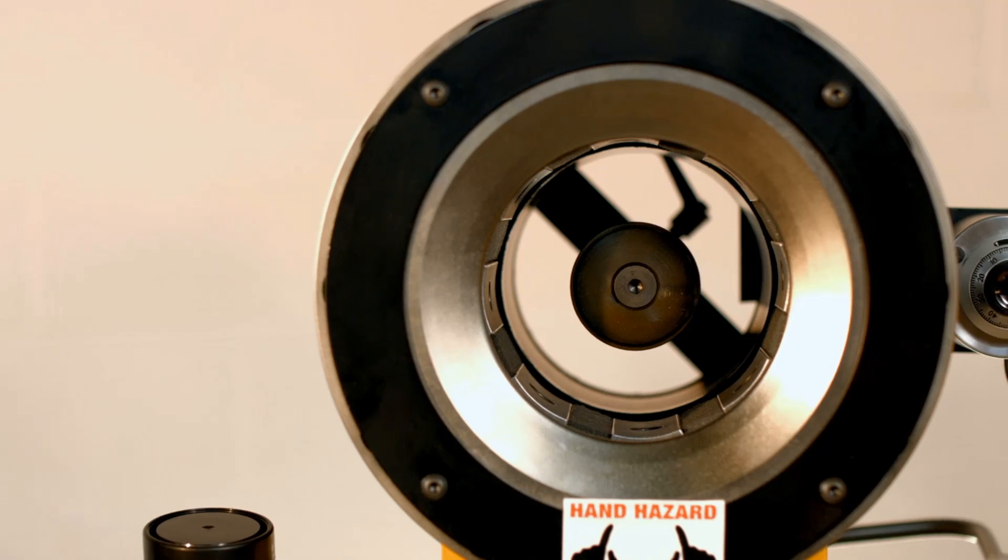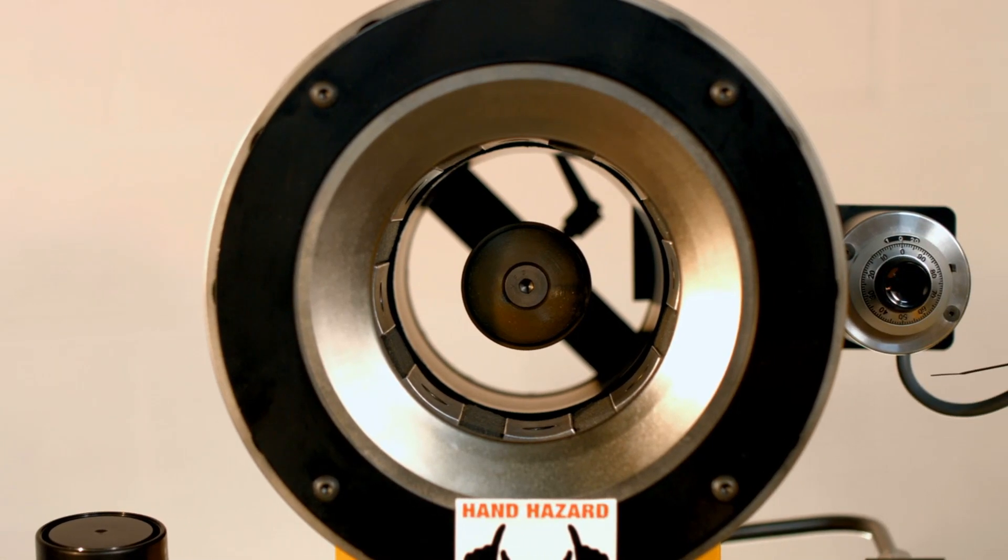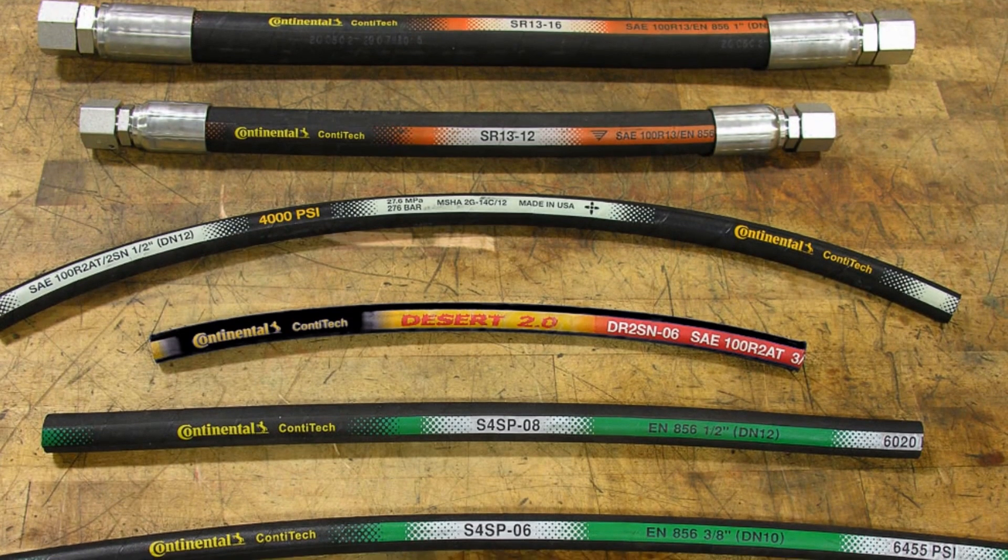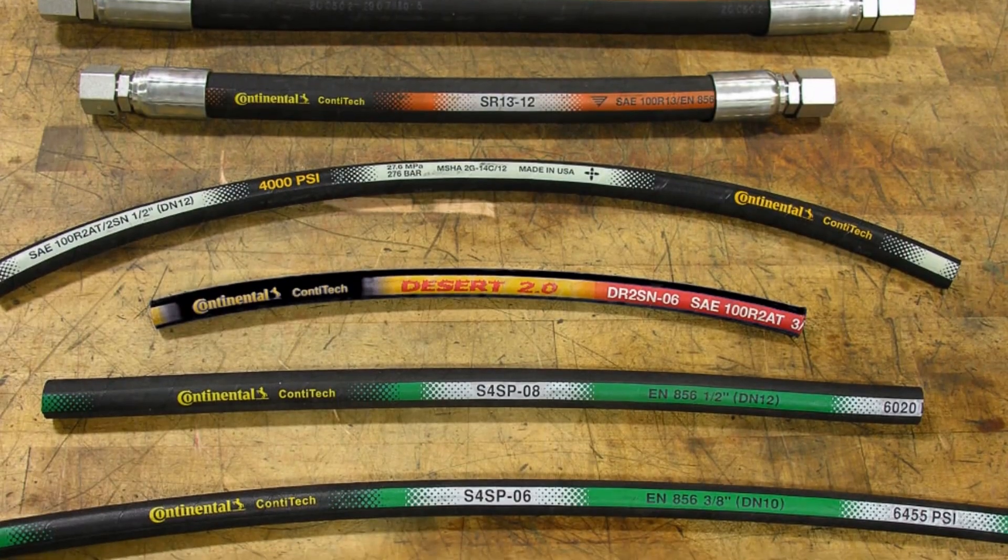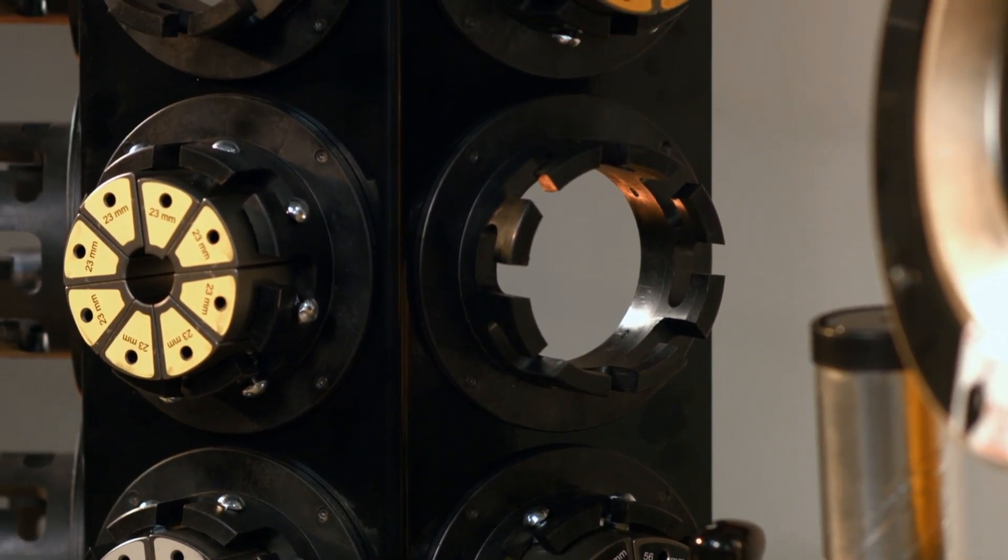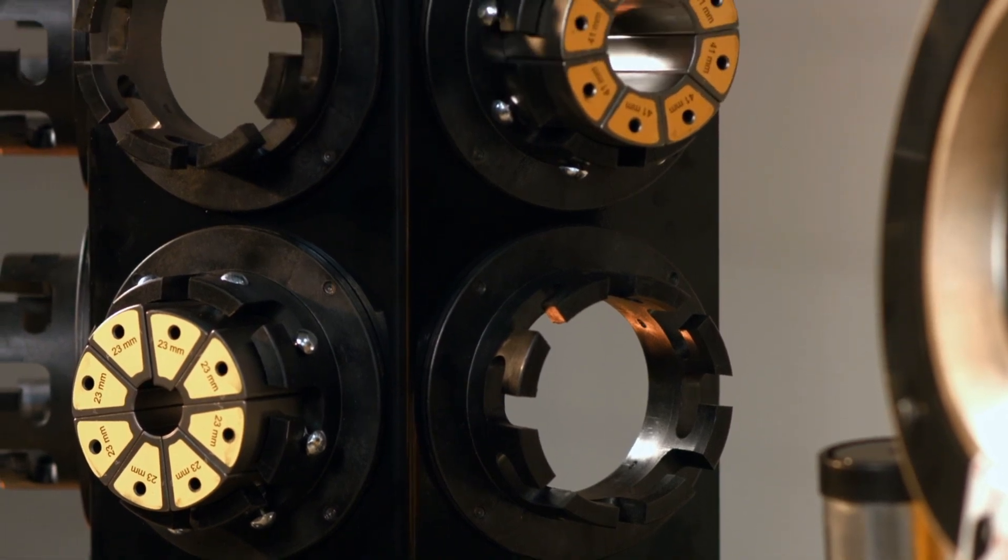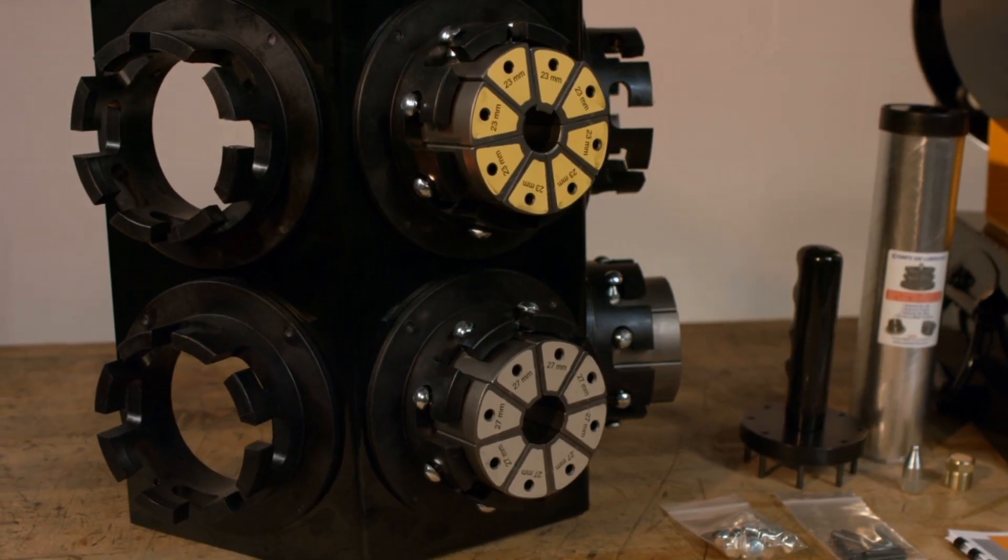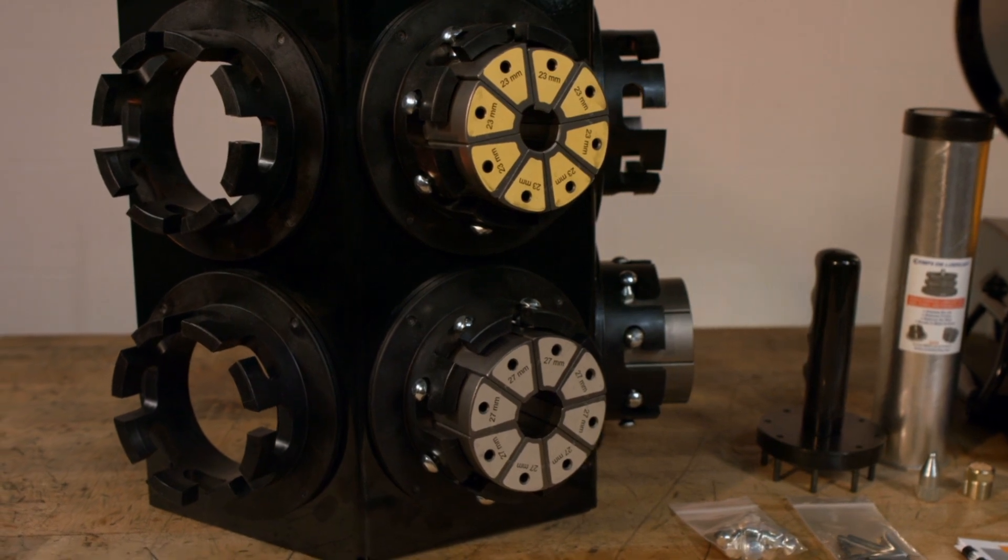This unit is designed for hoses up to 1.5 inches in diameter of 2-braid and 4-spiral construction. The Crimper comes with 9 die sets that range from 16mm to 56mm in diameter. They are color-coded and labeled for quick and easy identification.